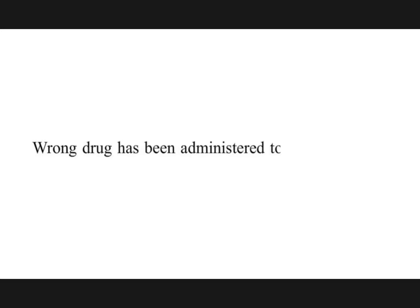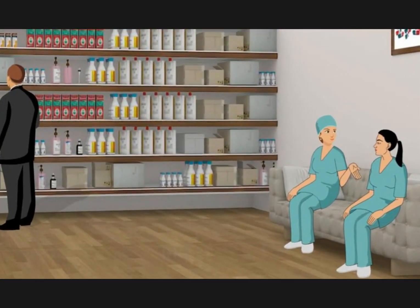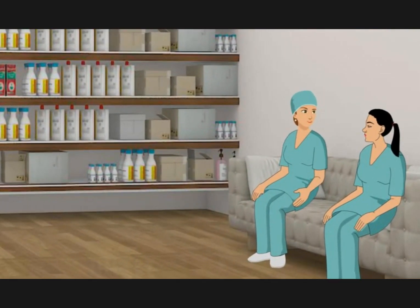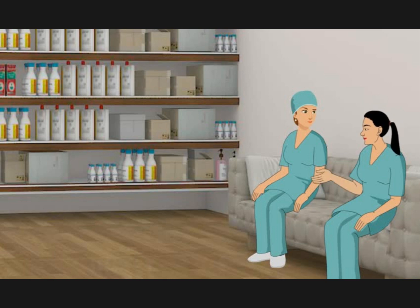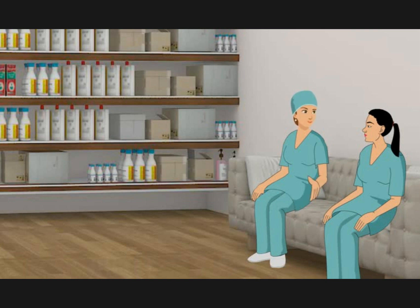A wrong drug was administered to a patient in the hospital, seriously affecting his health. Why was the patient given wrong medication? The nurse on night duty misread the drug name and got confused. Why was she confused? Drugs are stored alphabetically, and the administered drug had a name similar to the prescribed drug — these two similarly named drugs were stored side by side. The root cause is a defect in the system: improper storage of drugs. As per the symptom approach, the error is carelessness on the nurse's part. But as per the root cause approach, we must correct the defective system and adopt a better, error-free method for drug storage.